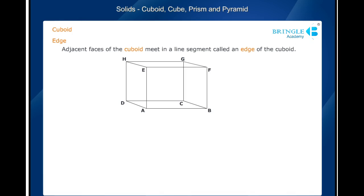A cuboid has 12 edges: AB, CD, EF, HG, AD, BC, EH, FG, AE, BF, CG, and DH.